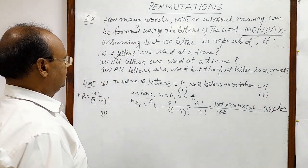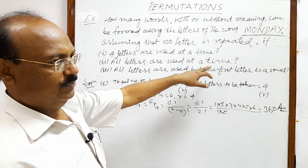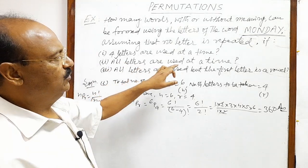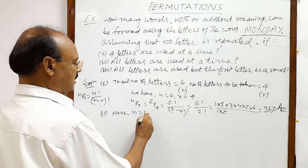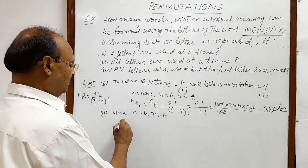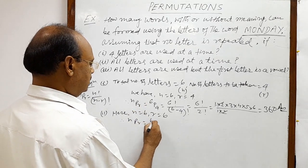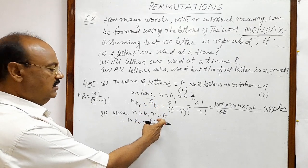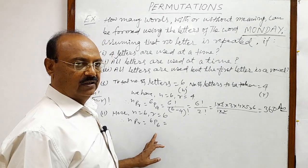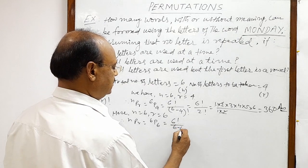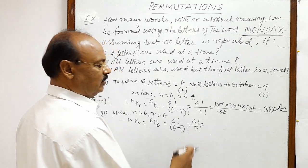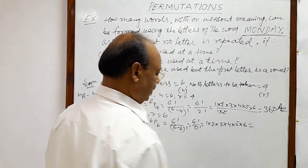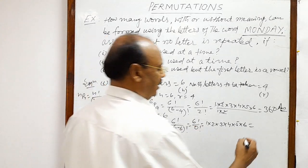Now let us see the second part: all letters are used at a time. Here both n and r are equal to six, so we calculate 6P6. Using the formula: 6!/（6−6)! = 6!/0! = 6!/1. So 1×2×3×4×5×6 = 720. This is the answer to the second part.